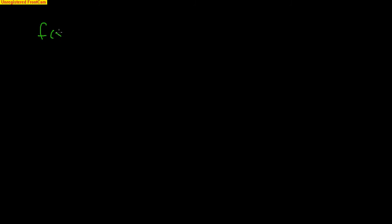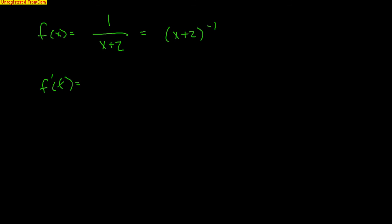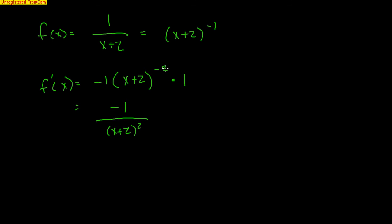Remember fractional problems like 1 over x plus 2? Using limits those were complicated. Watch: rewrite this as x plus 2 to the negative 1. Now use the chain rule. Negative 1 falls down in front, giving negative 1 times x plus 2 to the negative 2, times the derivative of the inside, which is 1. Cleaning up, the derivative is negative 1 over x plus 2 squared. That's it — just follow the chain rule.